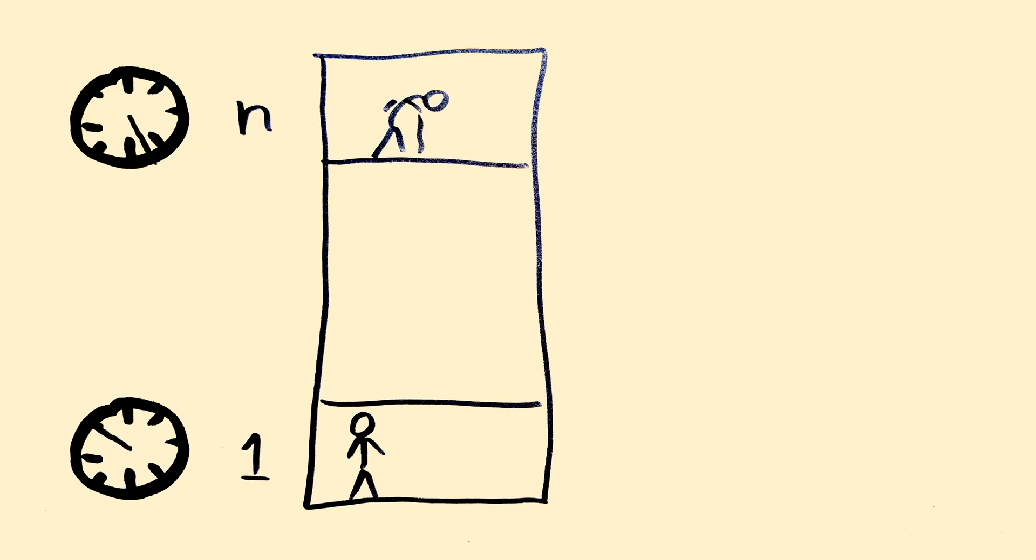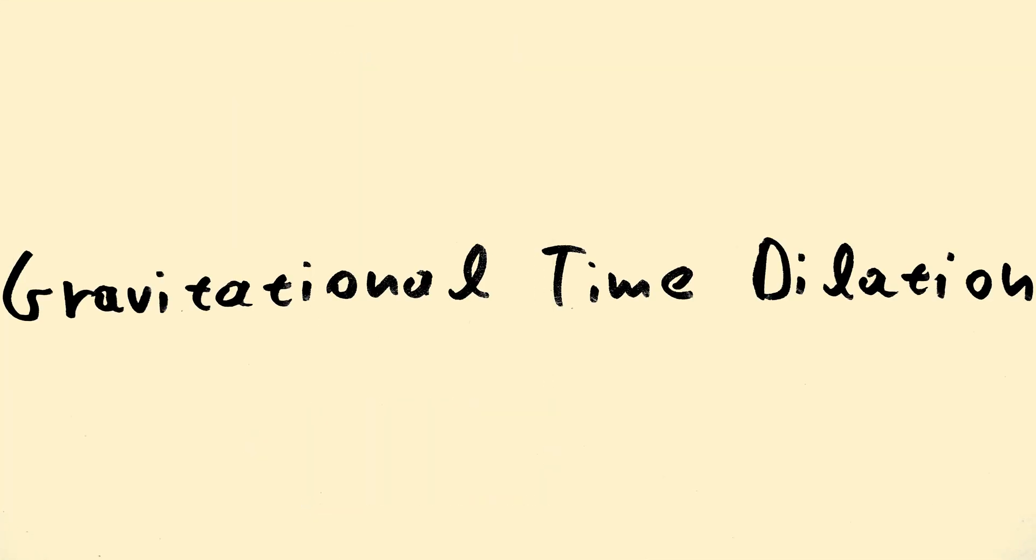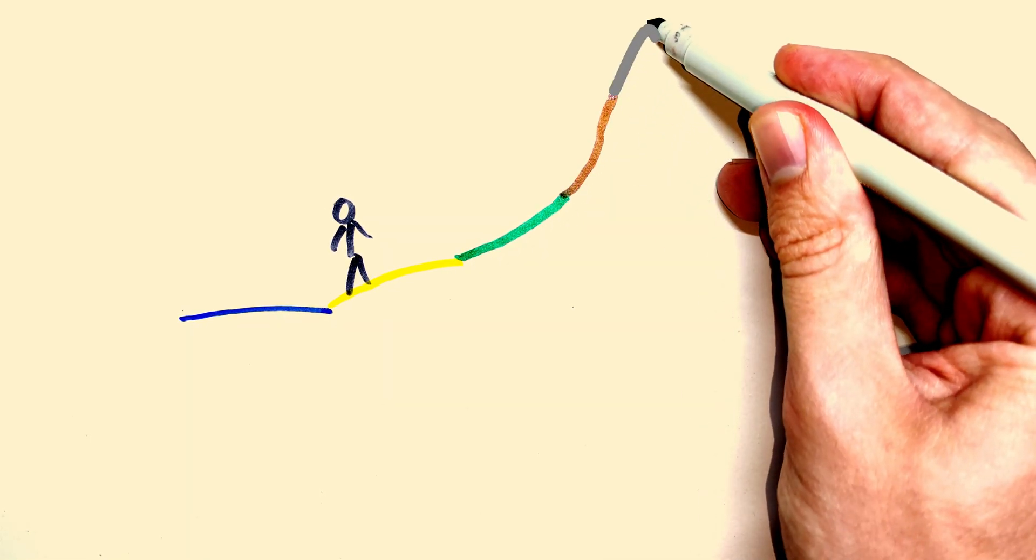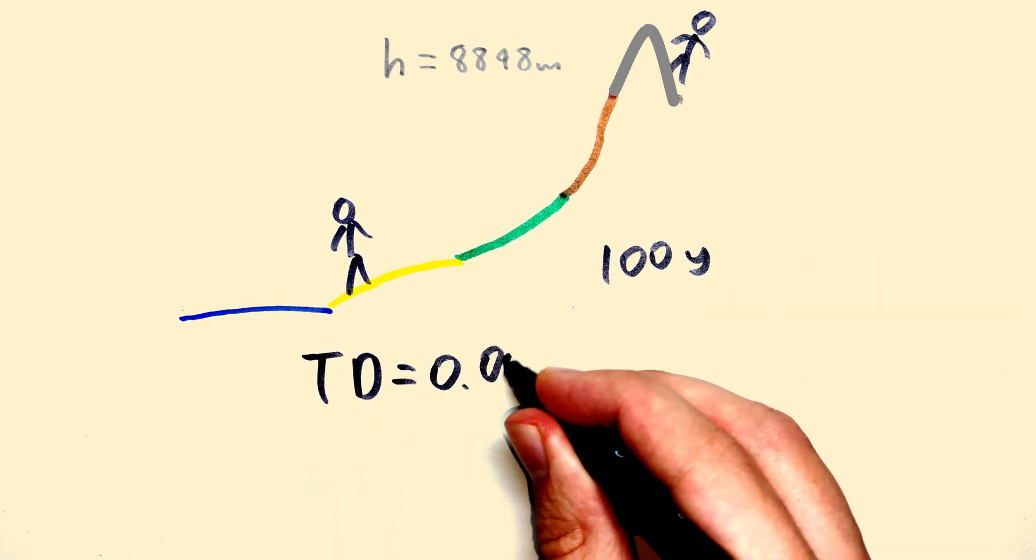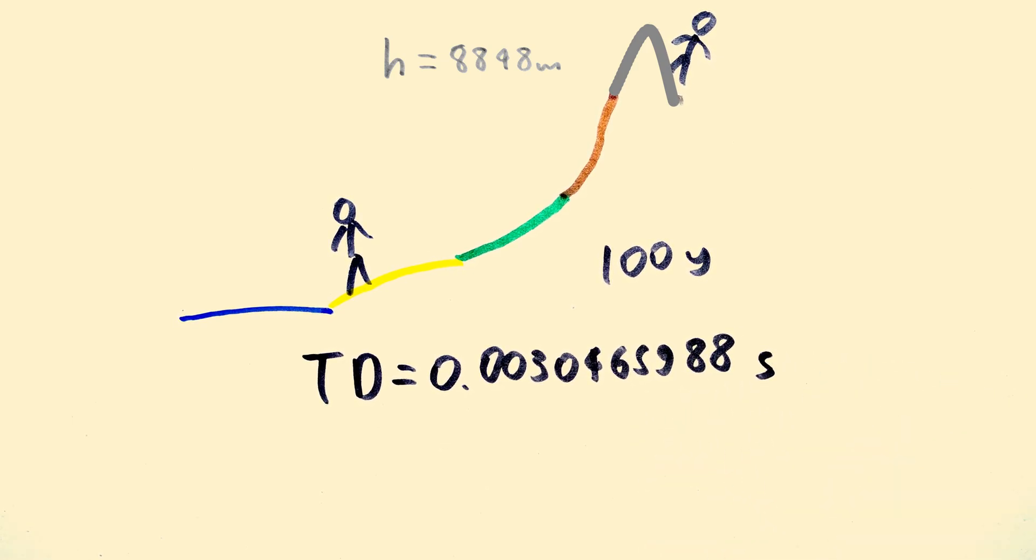This is called gravitational time dilation, and it's the real reason why light changes color while it's falling. Well, actually, the difference is very small. Even if you compare the time dilation of a person living at sea level with a person living on top of Mount Everest, over the course of 100 years, the total time dilation will be these seconds, which is tiny.